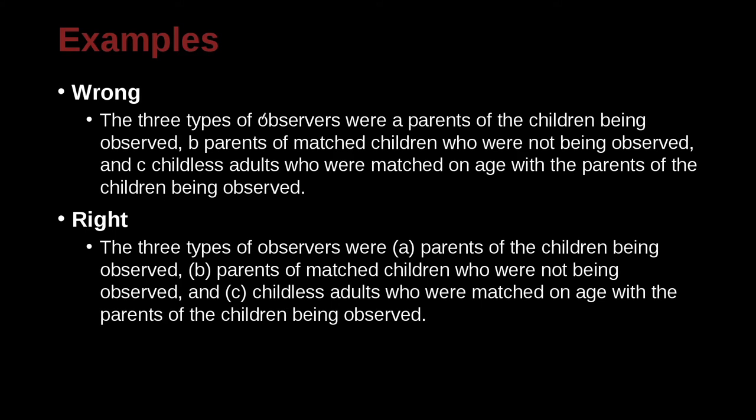The three types of observers were a, parents of the children being observed. Oh, I see A. This is an A. That's very hard to read. B, parents of the children who were not being observed. And C, childless adults. Okay. So remember, we can use parentheses to separate the different parts of the serial list. A, B, and C. Remember, space before, space after, and no space in between.